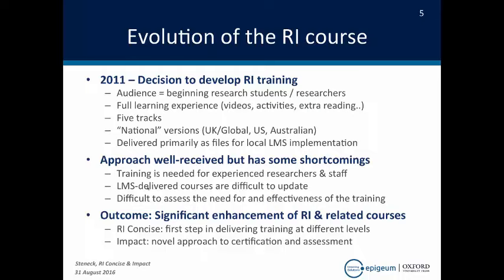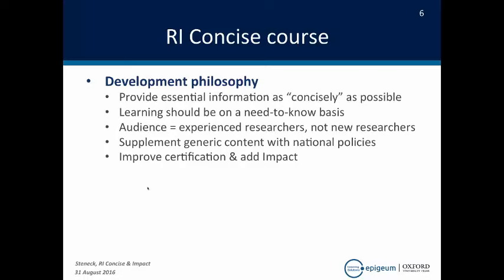The outcome is that we're in the midst of a significant enhancement of research integrity and related courses. The concise course is the first step in delivering training at different levels. We're adding IMPACT, which is a novel approach to certification and assessment. This is part of an overall upgrade to the entire training area. The development philosophy behind the concise course is to provide essential information as concisely as possible for experienced researchers. That learning should be on a need-to-know basis. Our audience is specifically experienced researchers, not new researchers. We've included national policies and are improving certification by adding IMPACT.